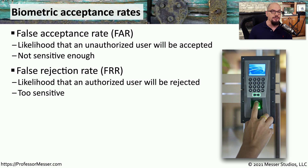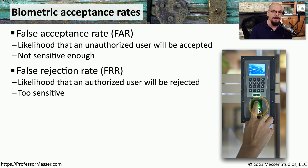On the other end of the spectrum is the false rejection rate, or FRR. This is when someone who is authorized to get into the system puts their finger on the fingerprint reader and, instead of getting a green light, they get a red light — even though they are authorized, they are rejected by that biometric reader. A large number of false rejections can frustrate users and prevent people from accessing places where they are authorized to go.